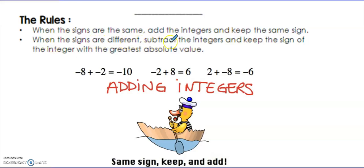When the signs are different, subtract the integers and keep the sign of the integer with the greatest absolute value.